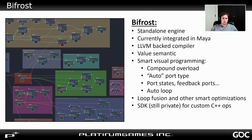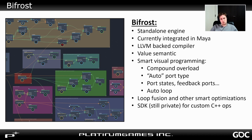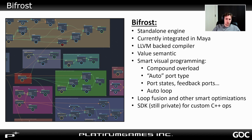And now we have Bifrost. Similar to Fabric, Bifrost is also a standalone engine which compiles graphs to fast machine code. The graph has a lot of smart features, like compound overload, meaning that the content of a compound can be changed depending on the input data type. You also have auto-port types, which work a bit like templates in C++. It has various port-specific options like port states, which allows you to update a value or an array inside a loop compound. You also have feedback ports, commonly used in simulation solvers to get data from the previous iteration. Another smart feature is auto-loop, which automatically turns a node or group of nodes into a loop when you feed it an array. Bifrost is really flexible while still being user-friendly — in my opinion, it has the best of both worlds between ICE and Fabric Engine.